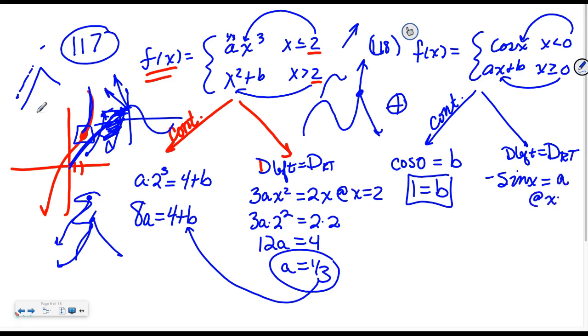This has to happen at that boundary line. So negative sine of 0 has to equal A. Sine of 0 is 0, which means A is 0. So my line that I'll meet up seamlessly with cosine x is the line y equals 0x plus B. So then I am done.